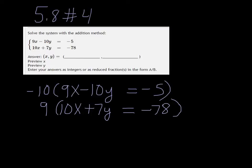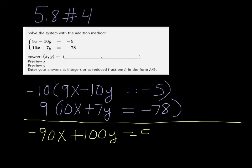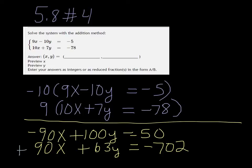Okay, so if we do the multiplication here, put a little line, we get negative 90X plus 100Y equals 50. And positive 90X plus 63Y, and then I'll use my calculator, 9 times 78, and it's negative so it's minus 702.